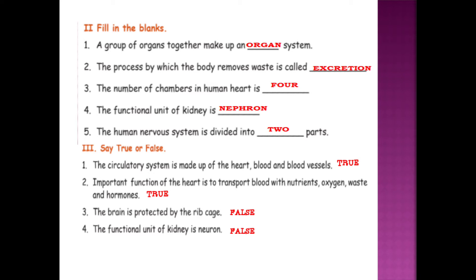True or false. The circulatory system is made up of heart, blood and blood vessels — True. Important functions of the heart is to transport blood with nutrients, oxygen, waste and hormones — True. The brain is protected by the rib cage — False. The functional unit of kidney is neuron — False.